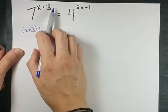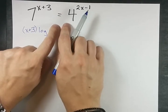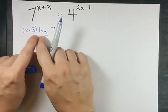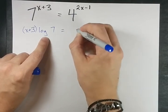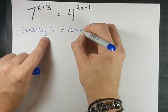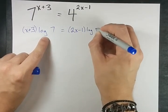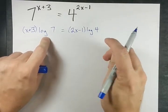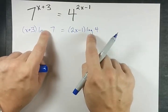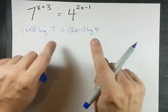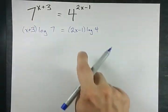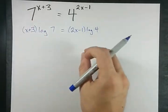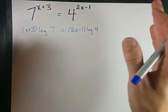Log of 7 to the x plus 3. You could bring that x plus 3 down and it's x plus 3 times log 7. And on this side, you end up with 2x minus 1 times log 4. Some students are going to prefer to make these decimals, but if your teacher is asking for an exact answer, you have to leave it as log 7 and log 4.